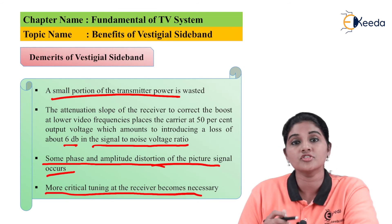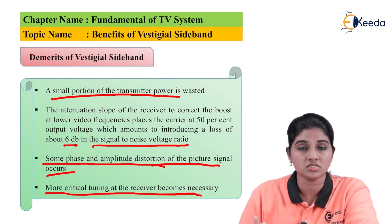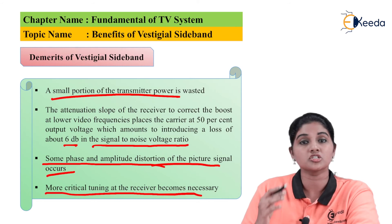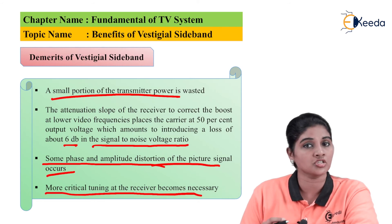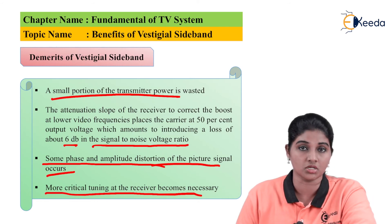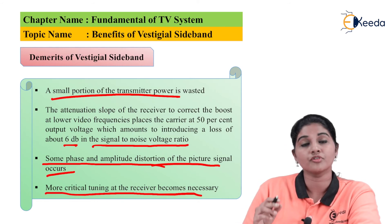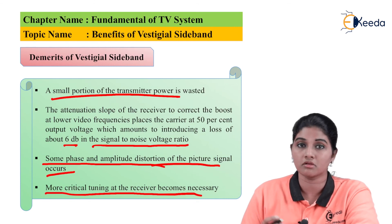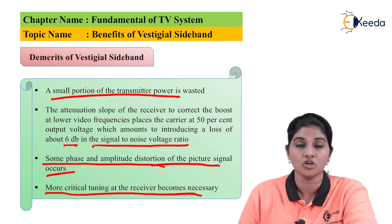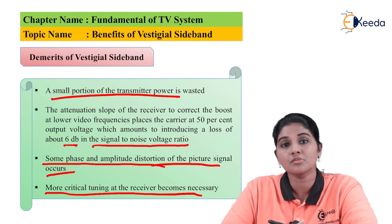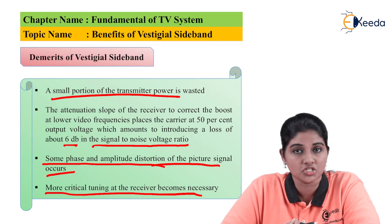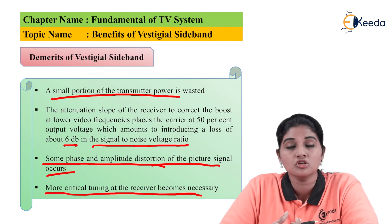Irrespective of these disadvantages, the vestigial sideband is still used for the transmission of video signals because of its main advantage, which is nothing but the reduction in bandwidth. So these are some of the advantages and disadvantages of the vestigial sideband.